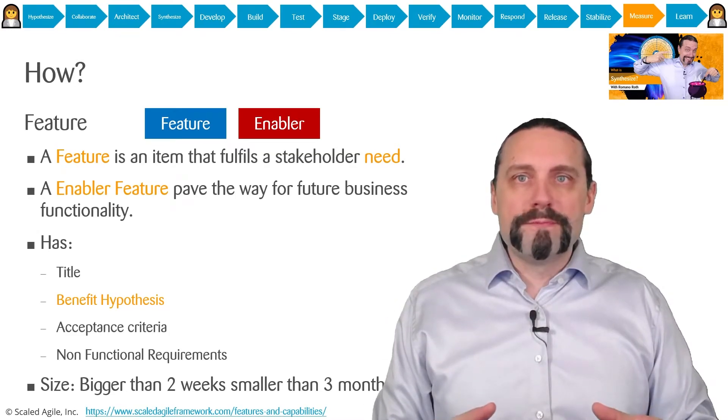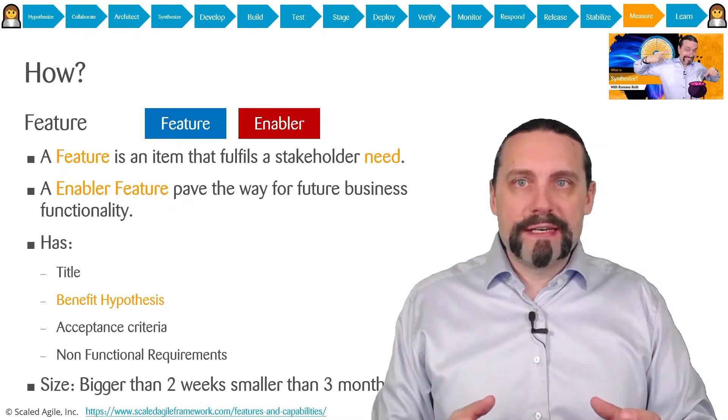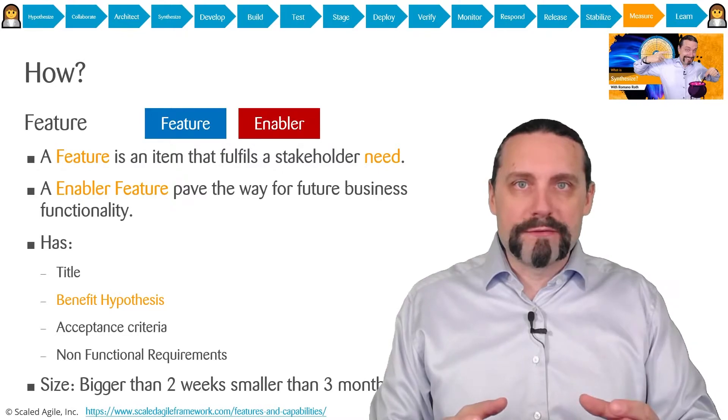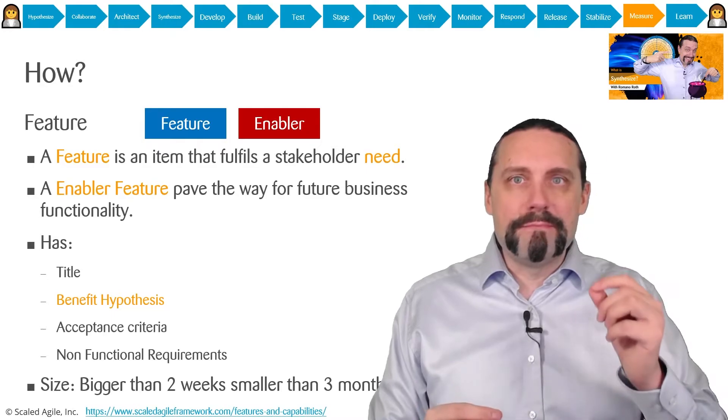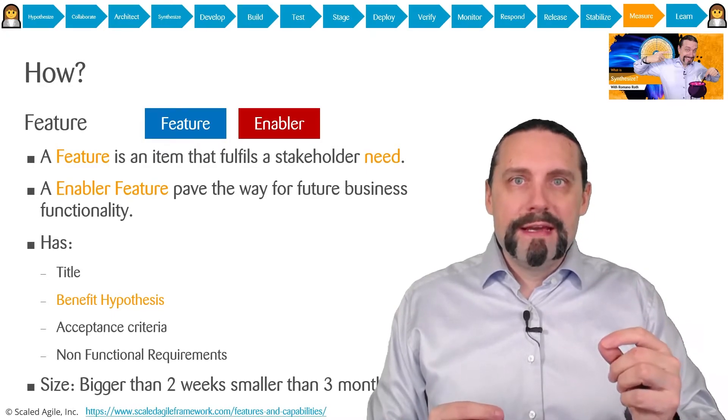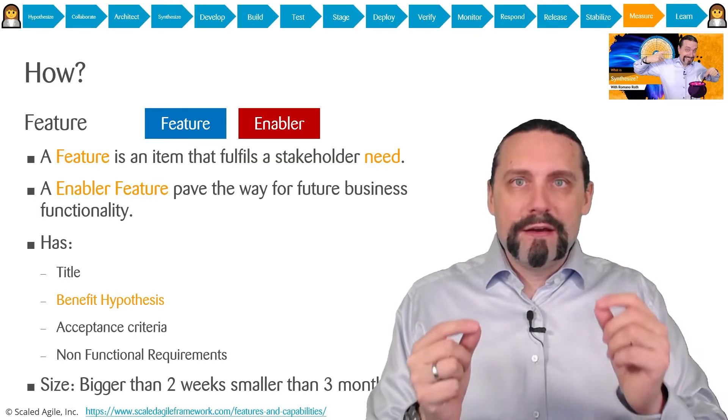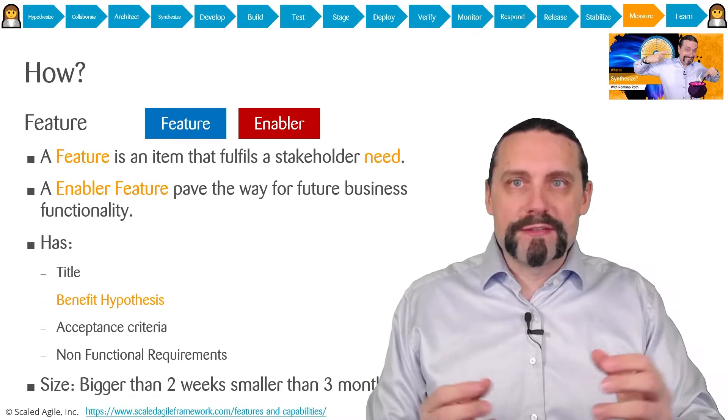A feature has a title, a set of acceptance criteria, and also important non-functional requirements. But the most important thing about the feature is the benefit hypothesis. And this benefit hypothesis is exactly what we're going to measure in the measure step.